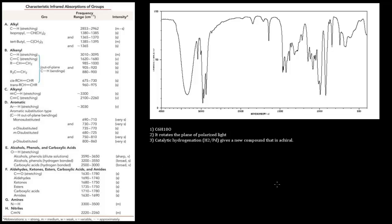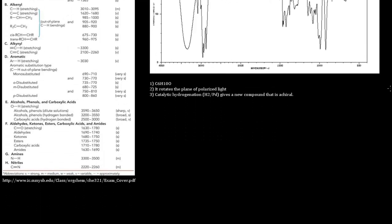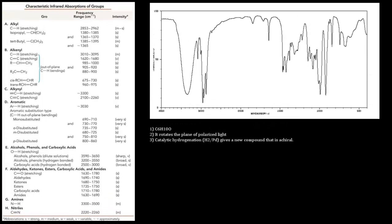Let's start with the oxygen. We know it can't be an ester or carboxylic acid, so it must be a carbonyl, alcohol, or ether. To check for a carbonyl, we look at the frequency range of about 1630 to 1780 cm⁻¹. Going to that region in the infrared spectrum, we notice there's nothing really there — and a carbonyl requires a strong stretch. There is no strong stretch in the 1630 to 1780 region, so it cannot be a carbonyl.